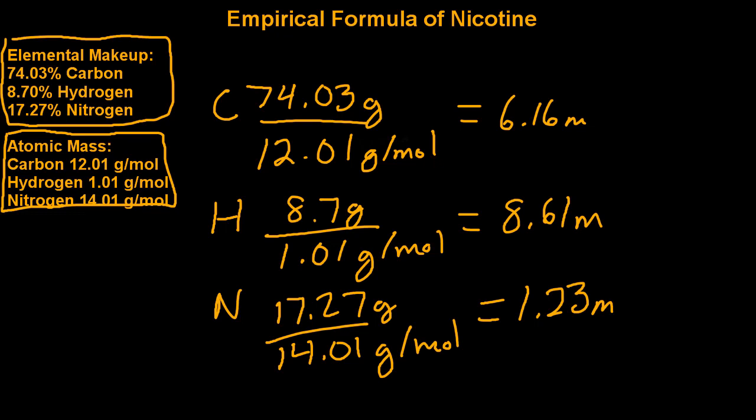So for carbon, it'll be 6.16 over 1.23, which gives us 5.01, which is roughly 5.